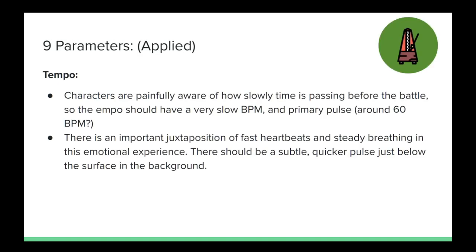Nine Parameters of Music Applied — Example. Tempo: The characters are painfully aware of how slowly time is passing before the battle, so the tempo should have a very slow BPM and primary pulse — I'm thinking around 60 beats per minute or maybe slower.